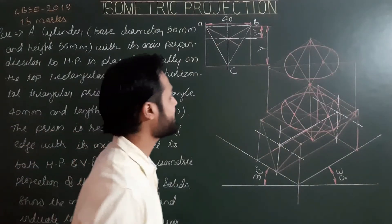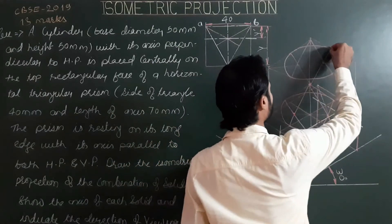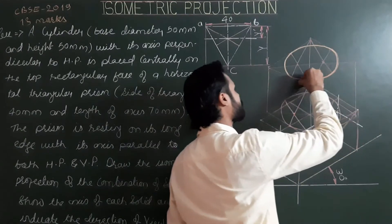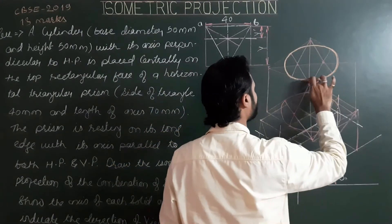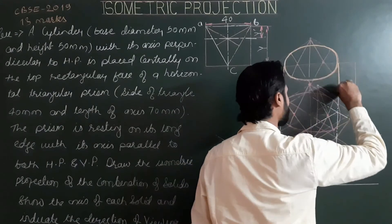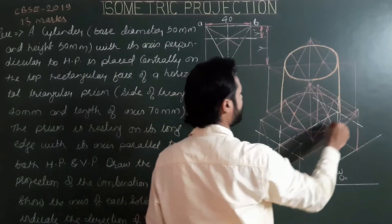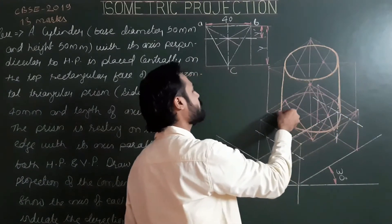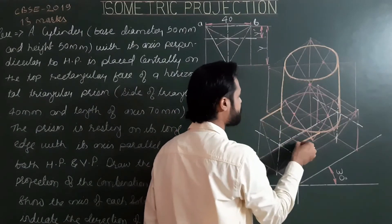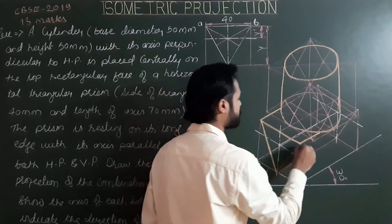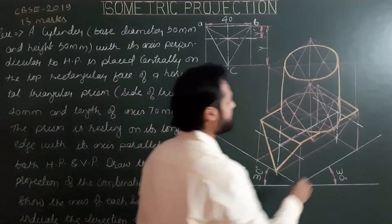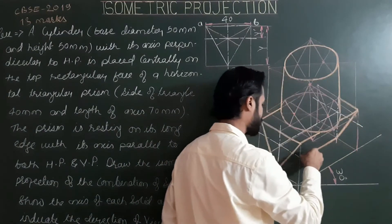Now show all visible sides and edges of the two solids. The upper circular base of the cylinder is fully visible. The generators — from extreme point on the diagonal to the extreme point on the diagonal — are fully visible. The front portion of the lower base is visible. Then show all visible generators and sides of the triangular prism.